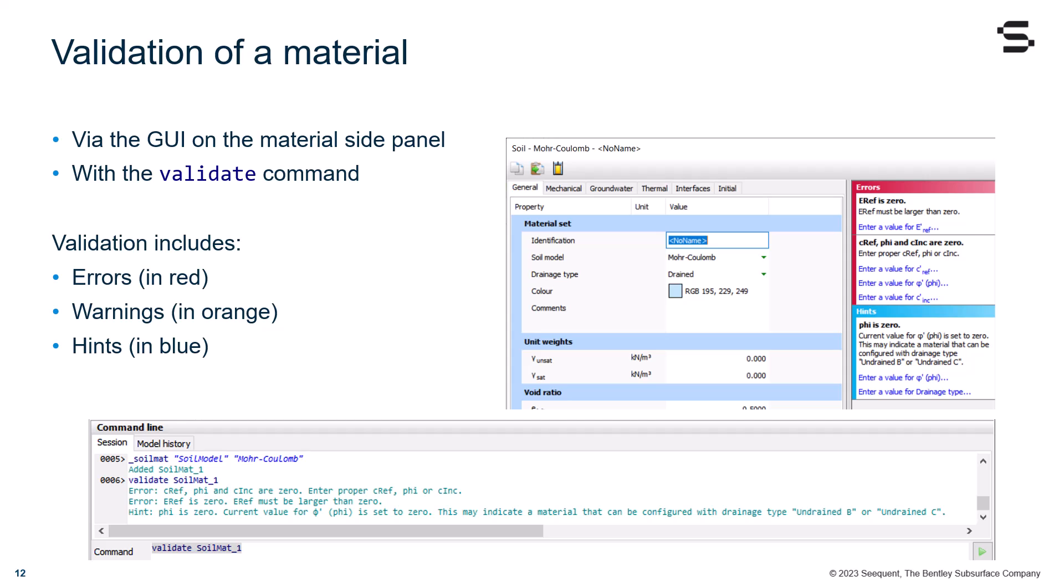Note that validation includes errors in red, warnings in orange, and hints in blue. You can see examples of the validation on the right and bottom of this slide.